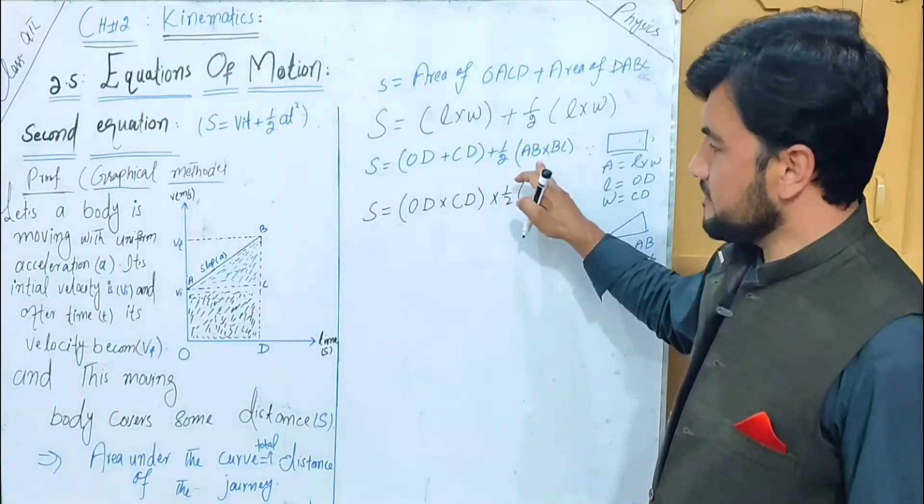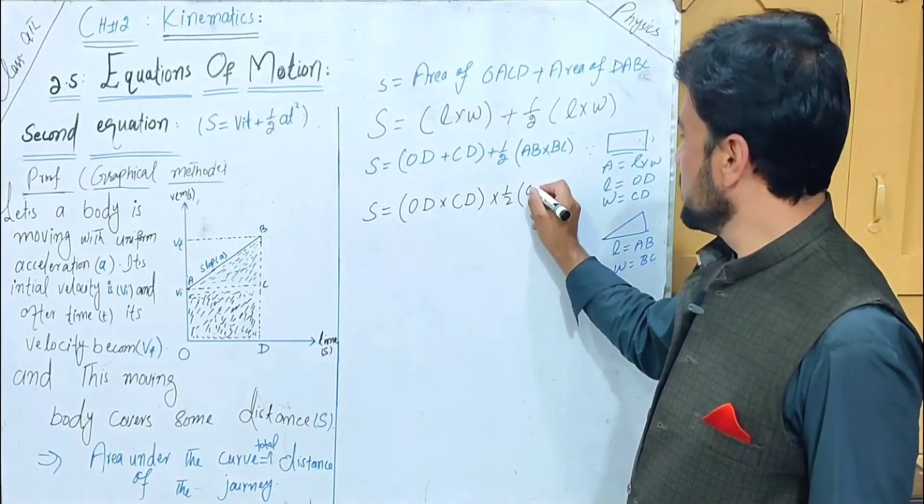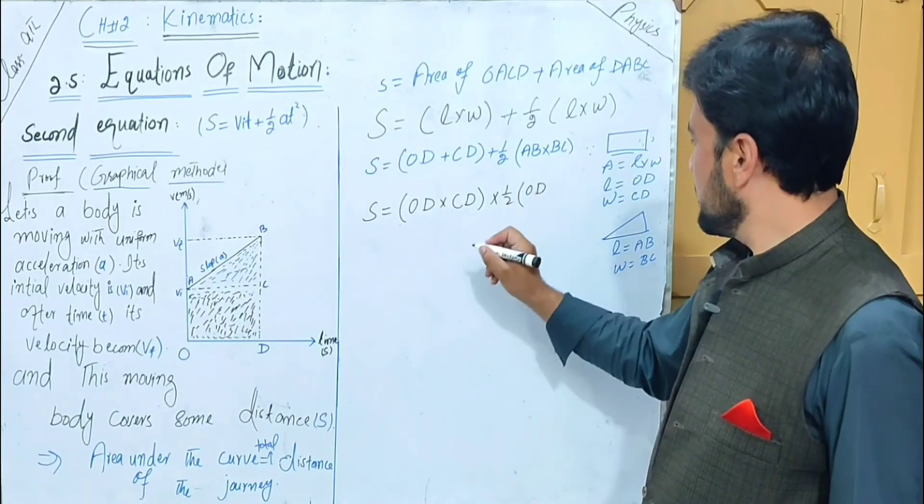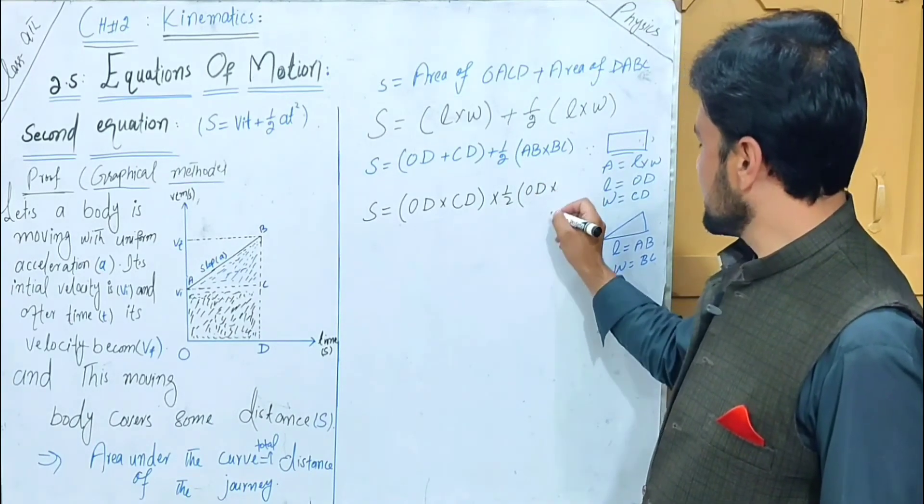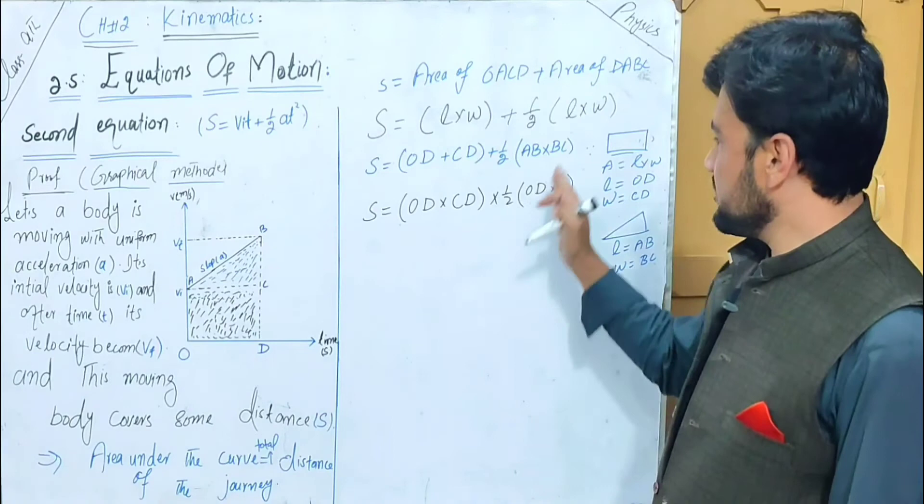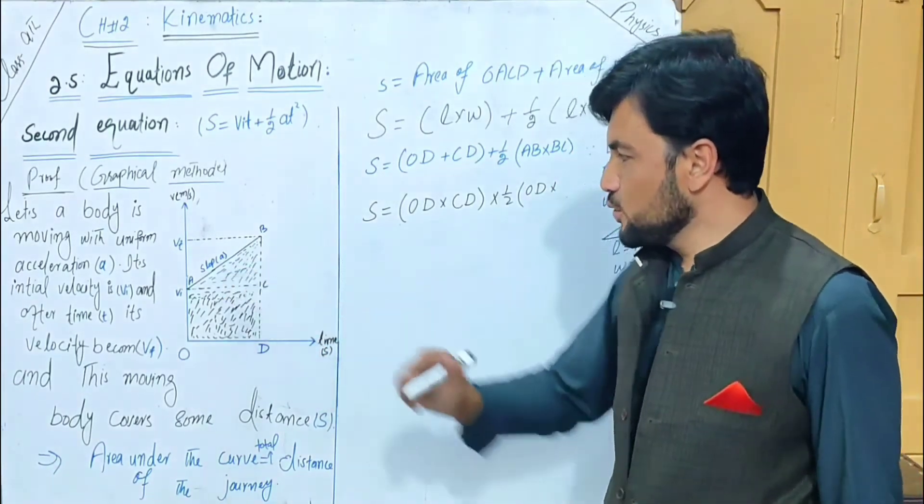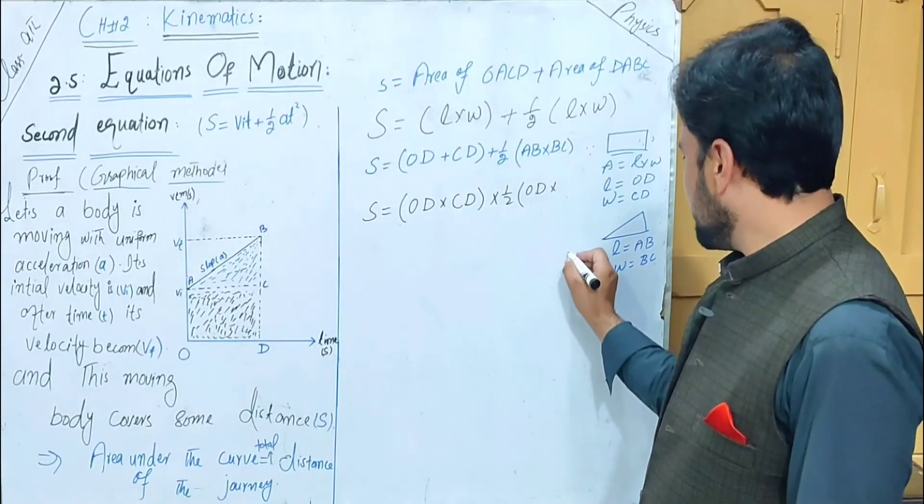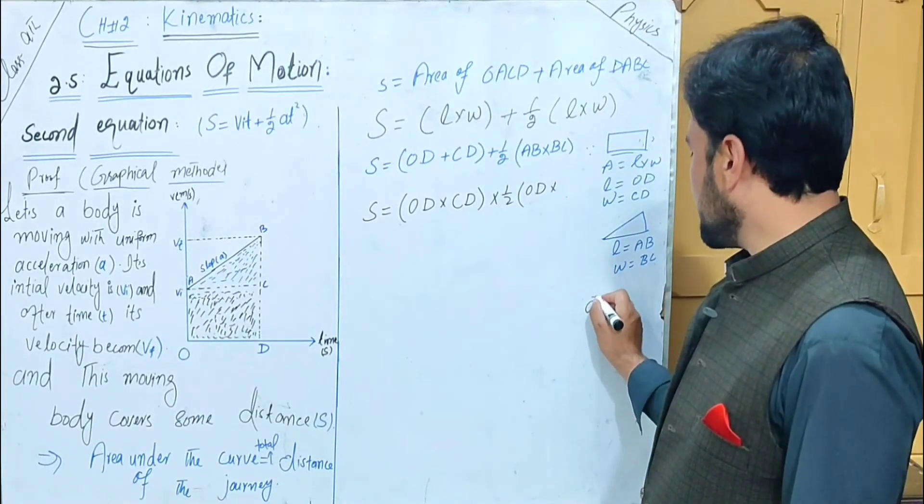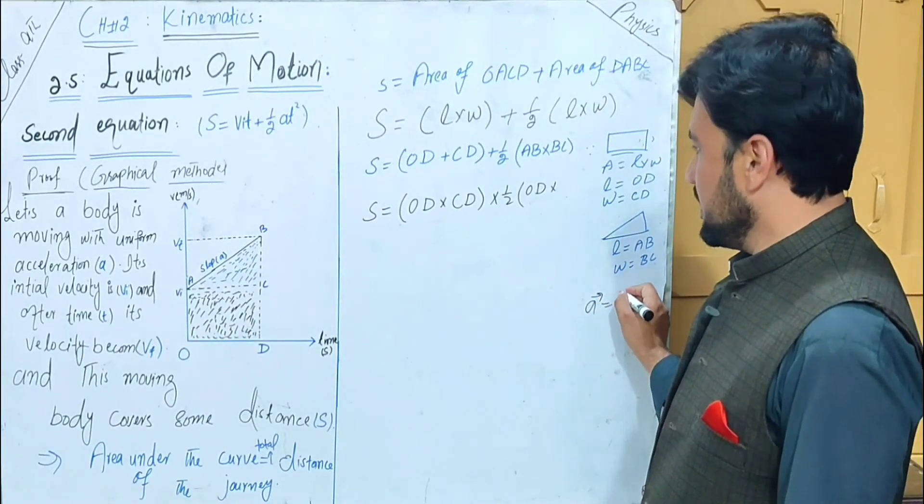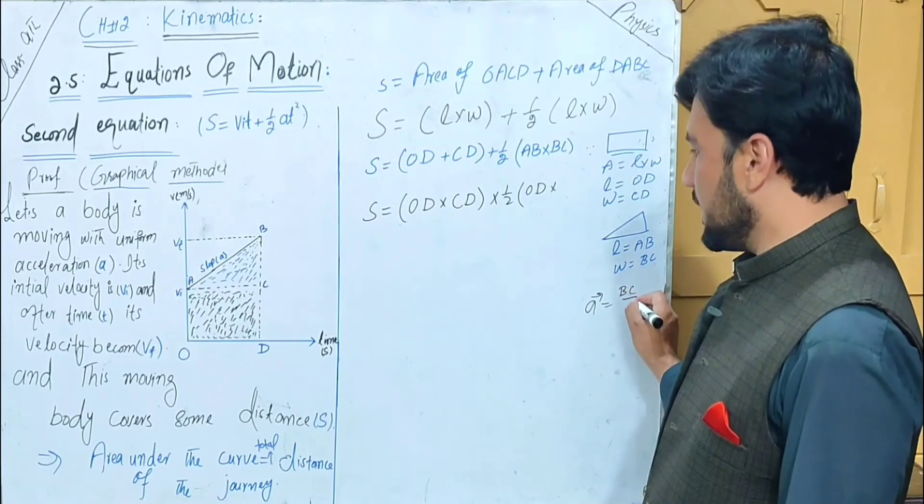Plus one over two. For triangle, L is AB and W is BC. AB equals OD, and BC—let me explain.